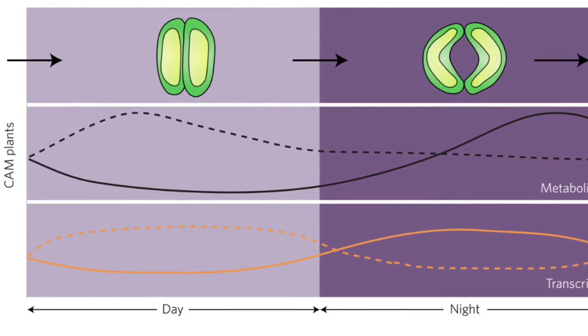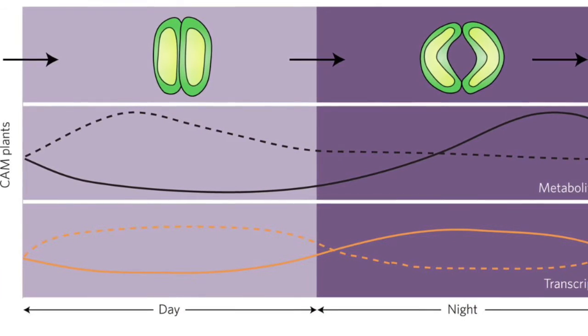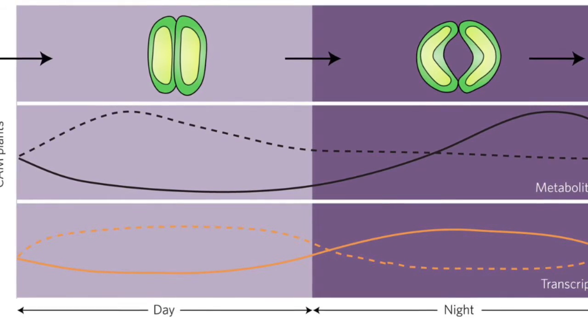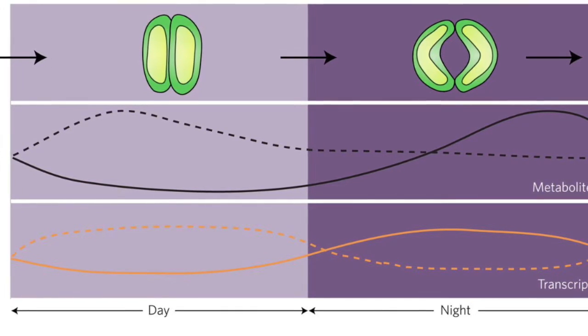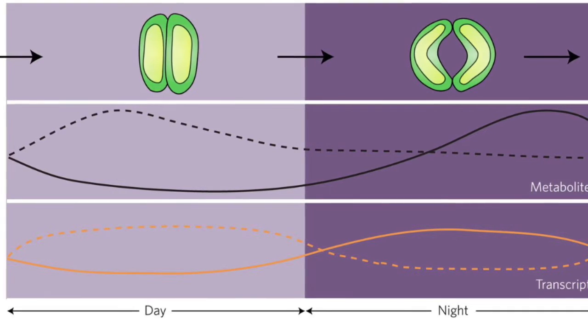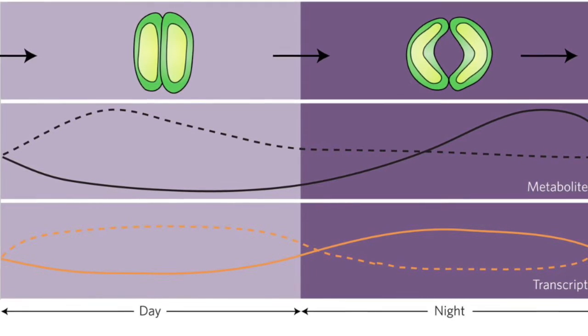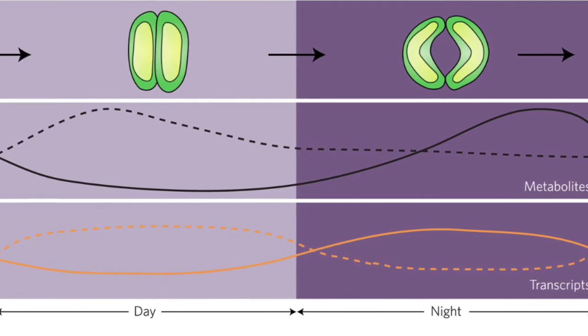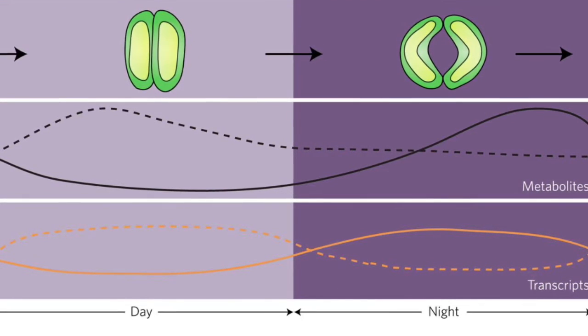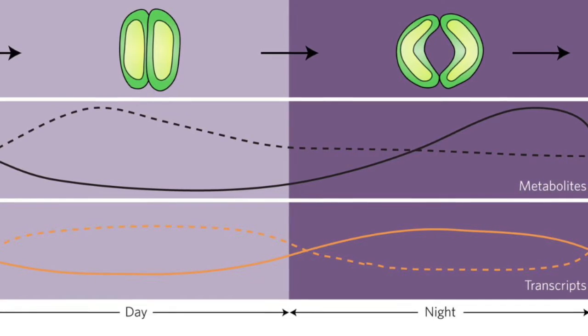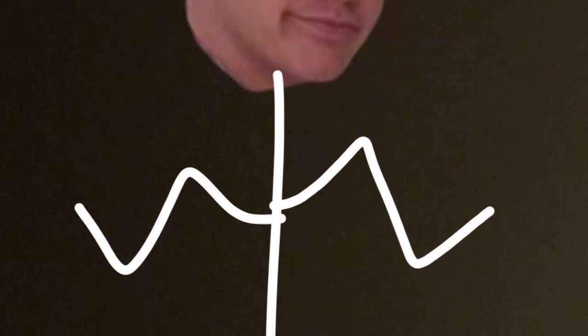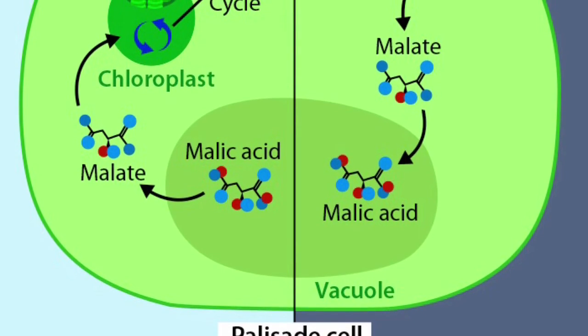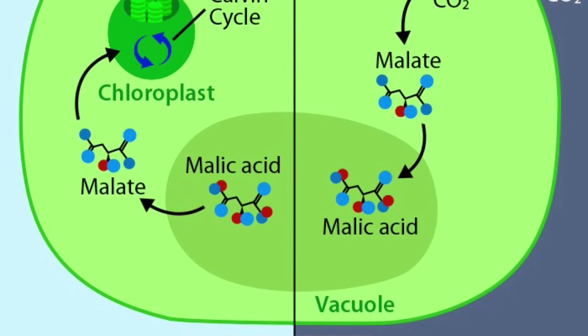CAM plants separate the light-dependent reactions and the use of CO2 in the Calvin Cycle based on time. At night, CAM plants open their stomata, allowing CO2 to diffuse into the leaves. The CO2 is then fixed into oxaloacetate by PEP carboxylase, and then converted to malate or another type of organic acid, which is stored inside vacuoles until the next day.